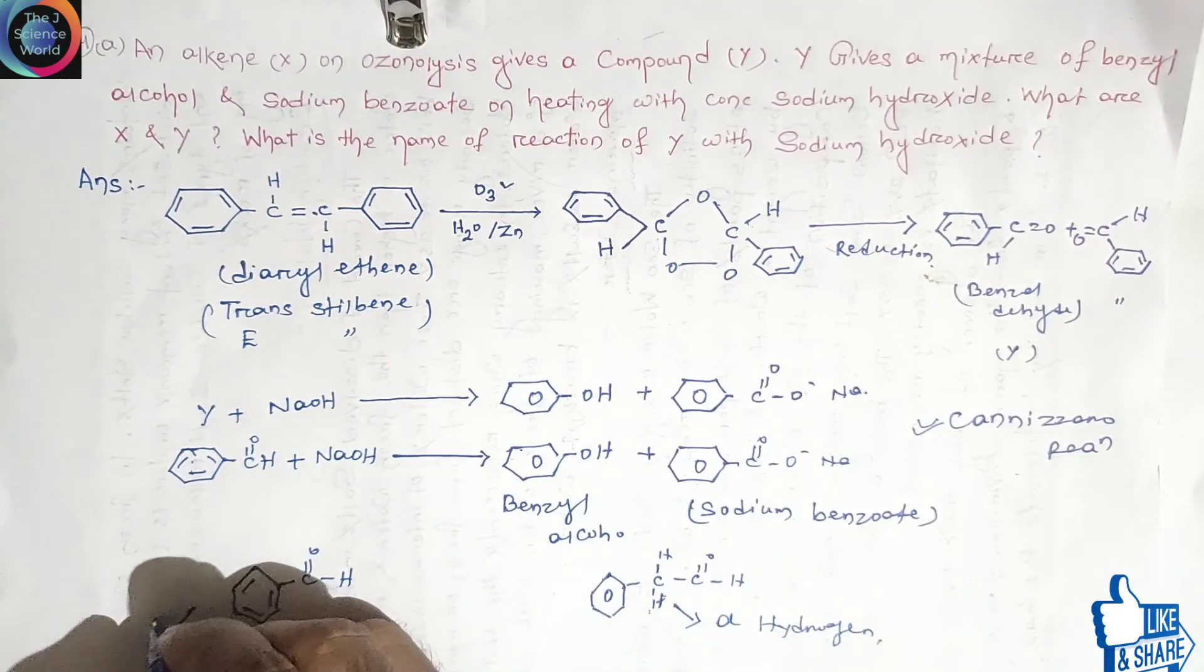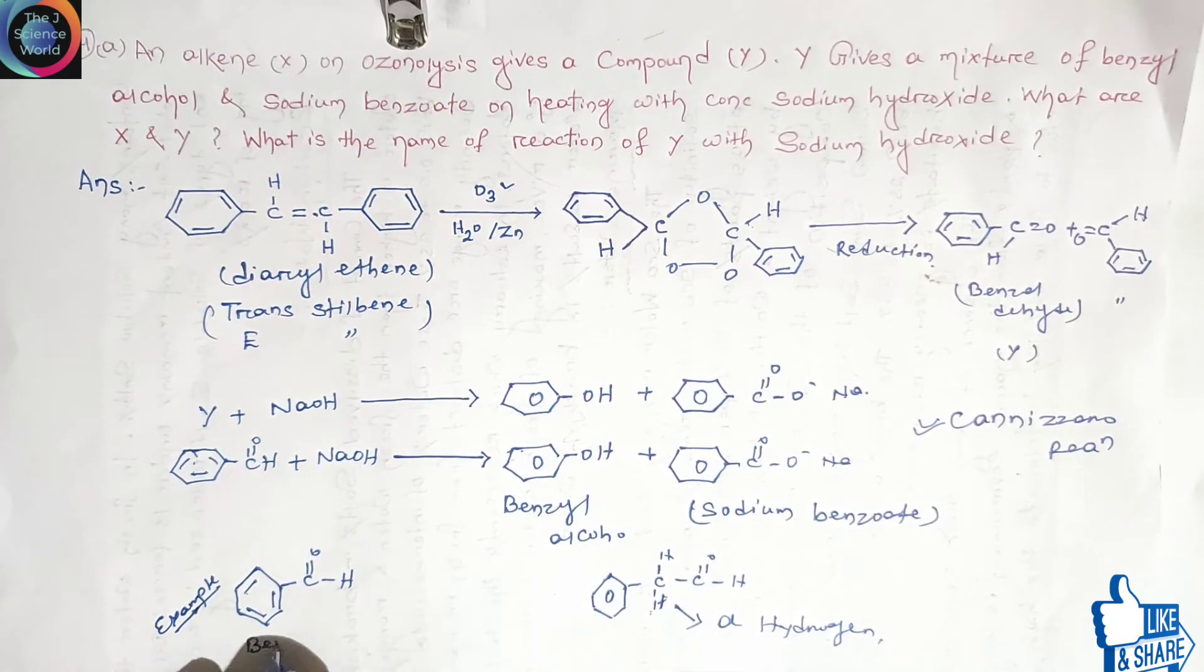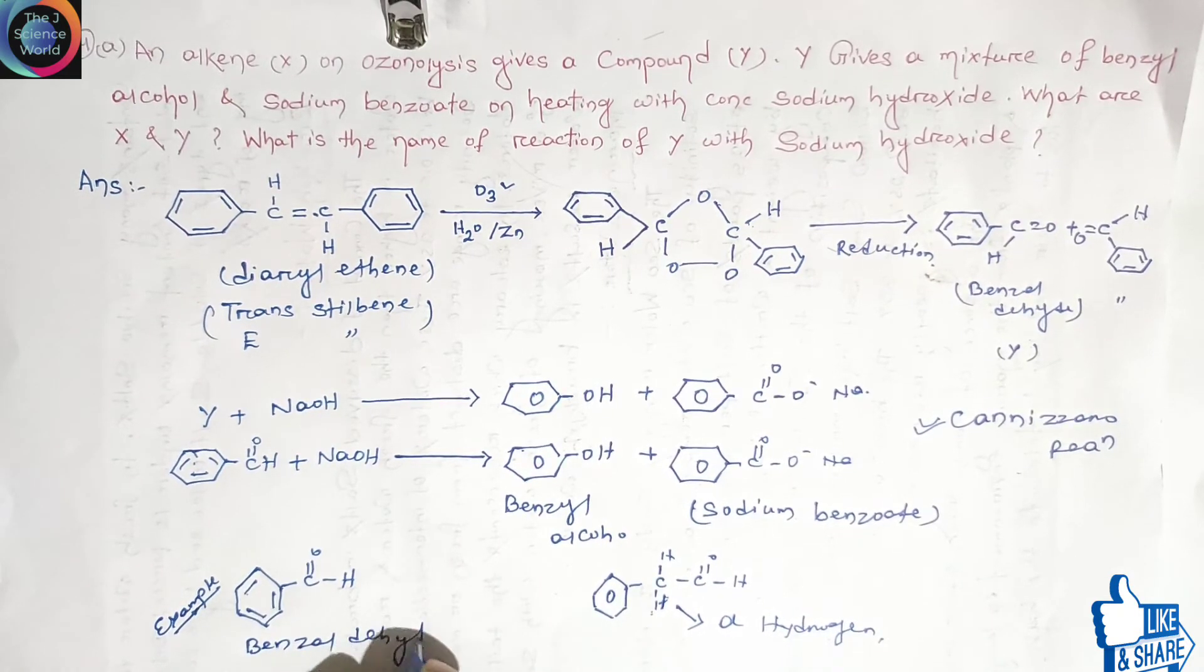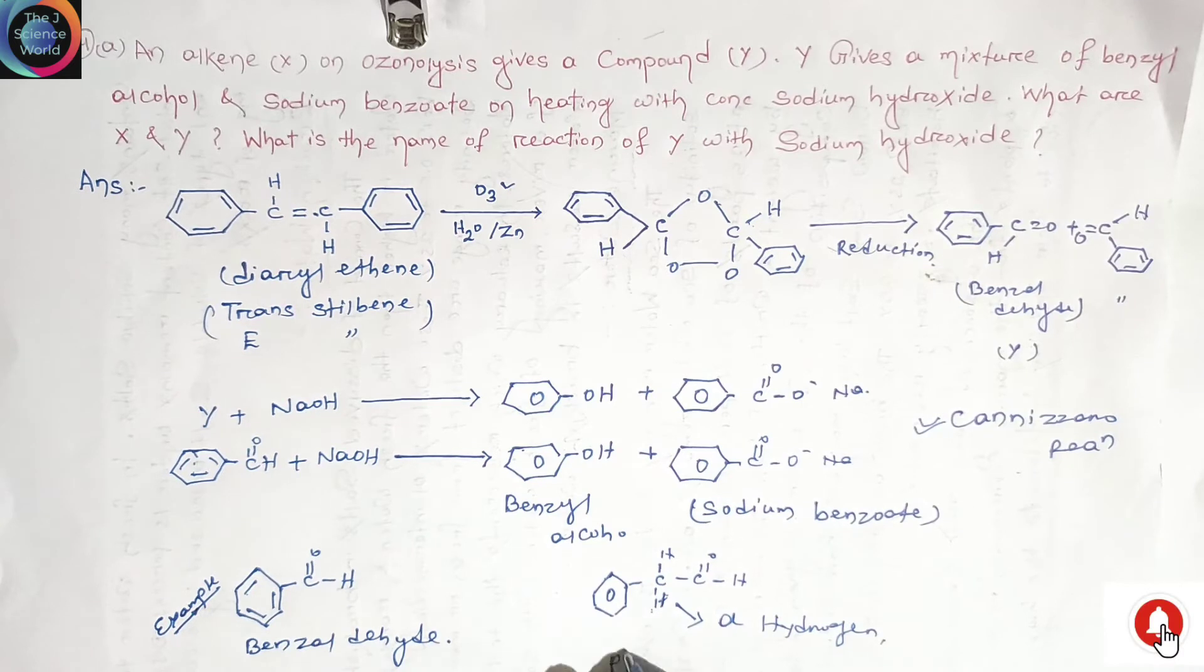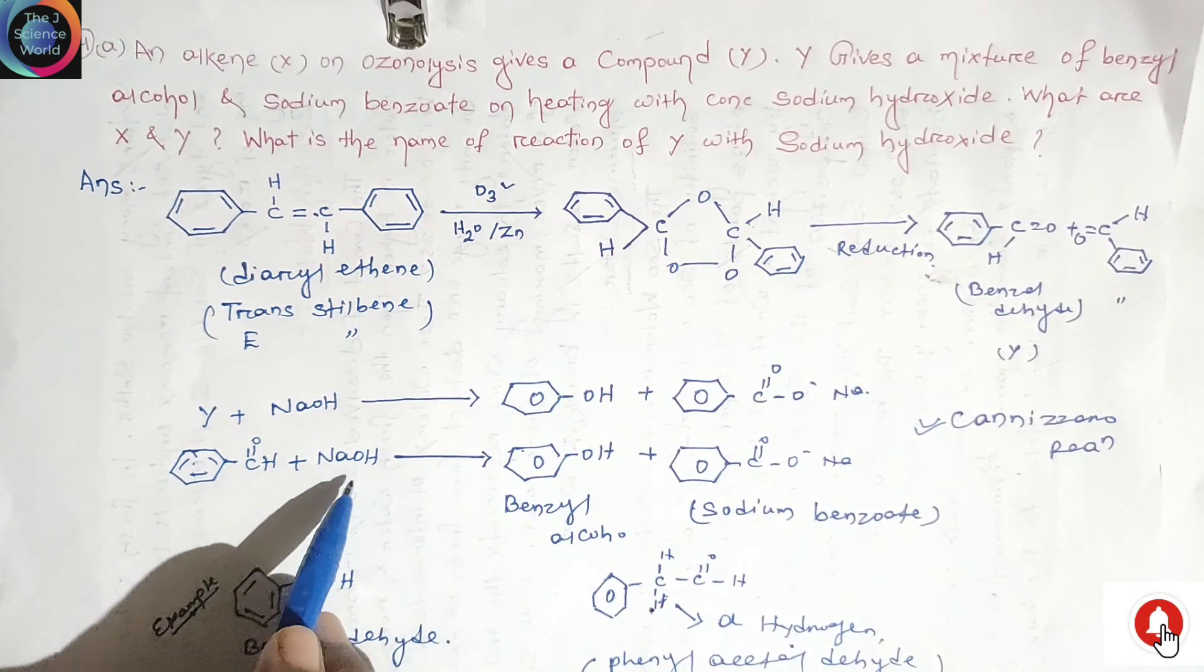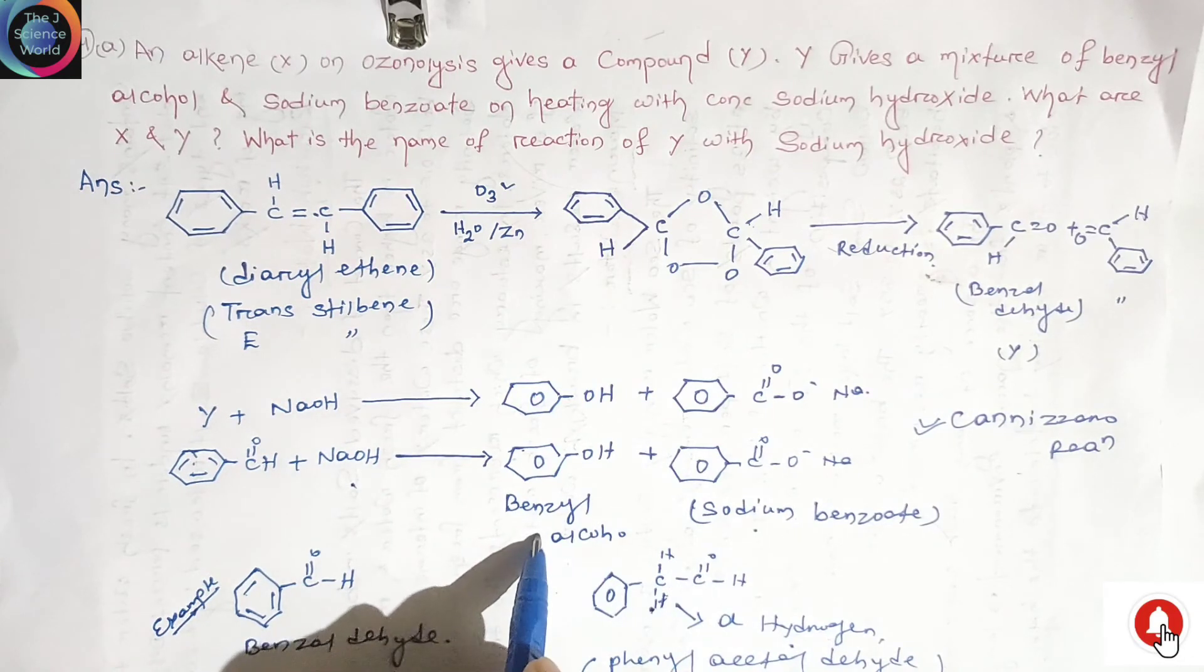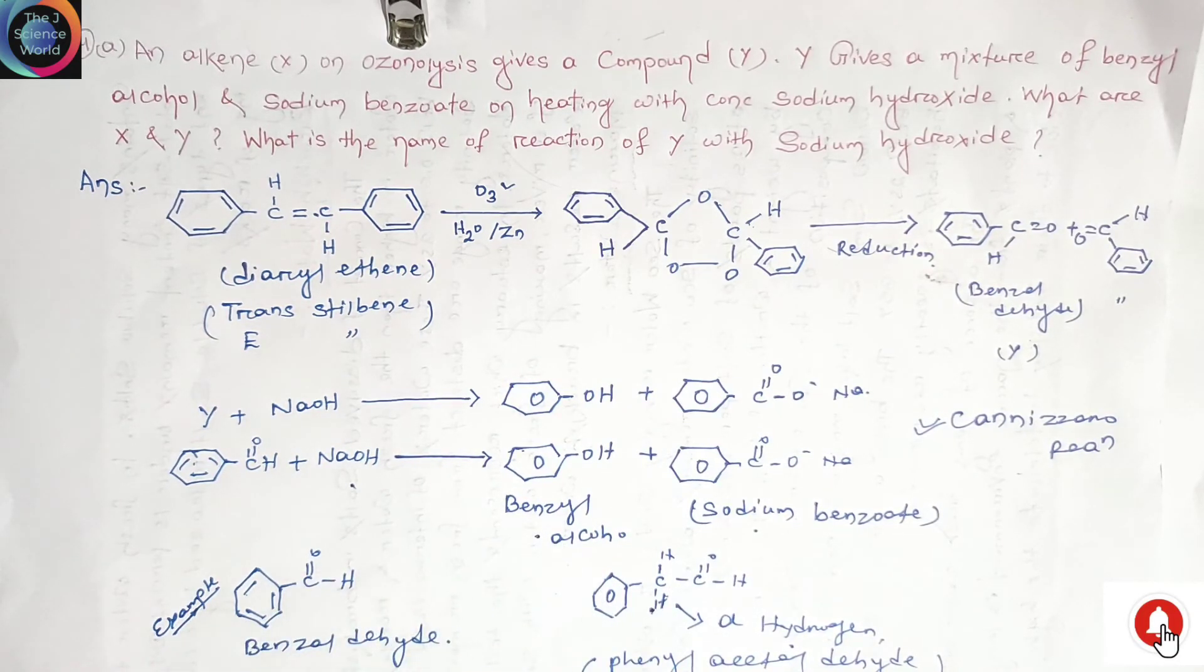Let's take two examples. This is our benzaldehyde and this is our phenylacetaldehyde. Benzaldehyde does not have any alpha hydrogen, but in case of phenylacetaldehyde this is our alpha carbon containing alpha hydrogens. Cannizzaro reaction states that when benzaldehyde treatment with aqueous sodium hydroxide or potassium hydroxide, it forms sodium benzoate and benzyl alcohol. If alpha hydrogen is present, it does not undergo base catalyzed self condensation.